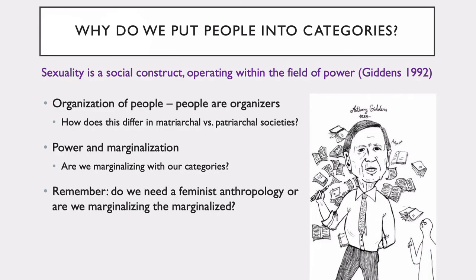Why do we put people into categories? Sexuality is a social construct — we know that to be true because it organizes people in different ways in different societies. However, as Giddens notes, it operates within the field of power. When that's put into a field of power, this is where marginalization comes in. Are we marginalizing the marginalized with these further categories? We've already seen women as a marginalized category, so if we're looking at other gender identities within that greater category, do we really need a feminist anthropology, or are we just continuing to marginalize those who are already marginalized?